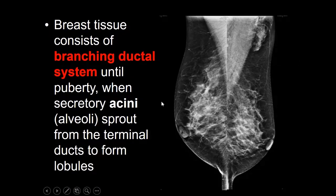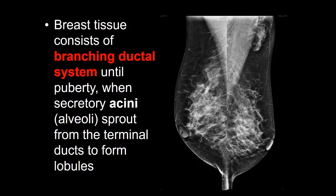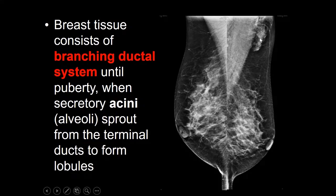The breast does not fully develop until puberty. Up until that point, it's really just a branching ductal system. At puberty, the secretory acini will sprout and form the terminal ducts in order to form those lobules. Here you can see the breast tissue on the mammogram of this patient, and notice up here on the left side there is accessory breast tissue. This is important because sometimes this accessory breast tissue does not communicate with the rest of the breast tissue, so during lactation it can fill up with milk and not be able to empty. Patients with accessory breast tissue sometimes become very symptomatic in the latter part of their menstrual cycle.